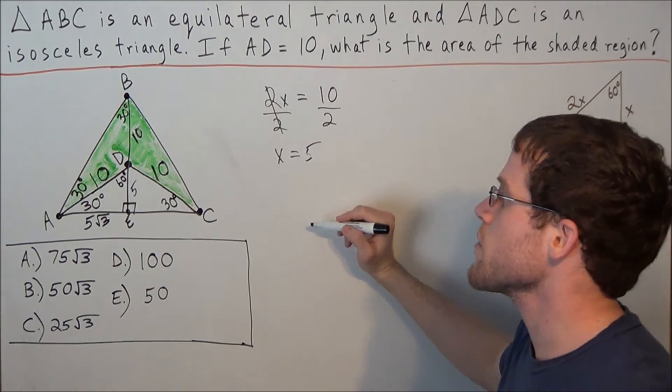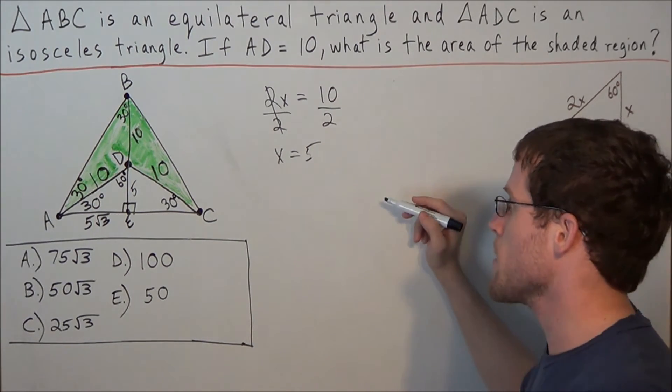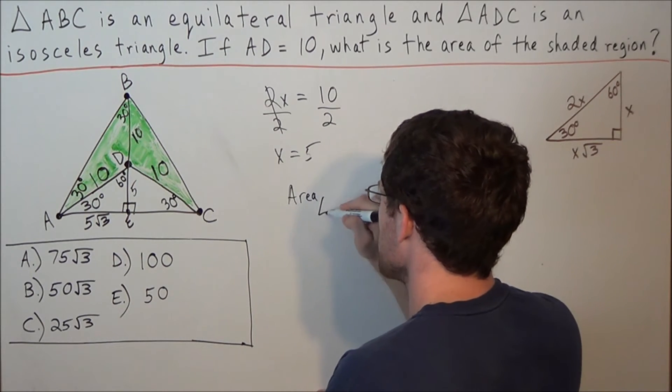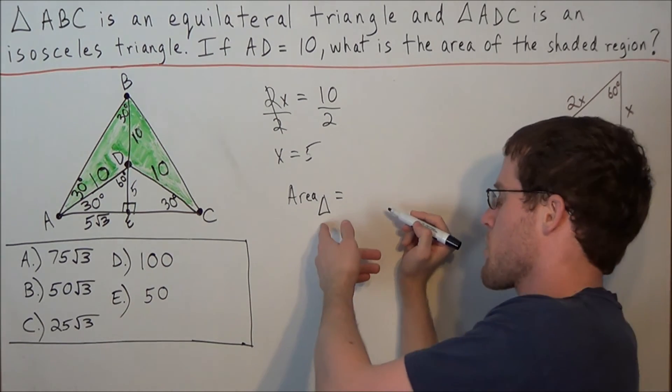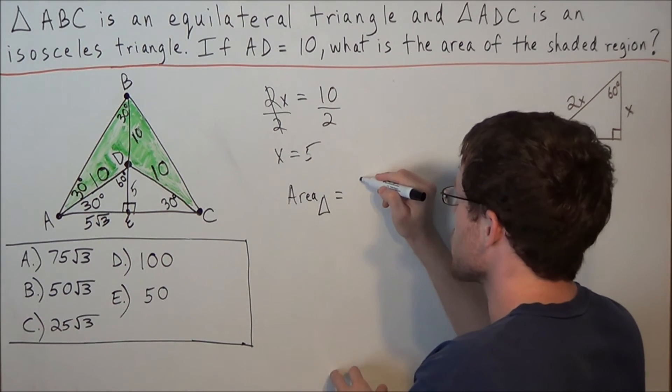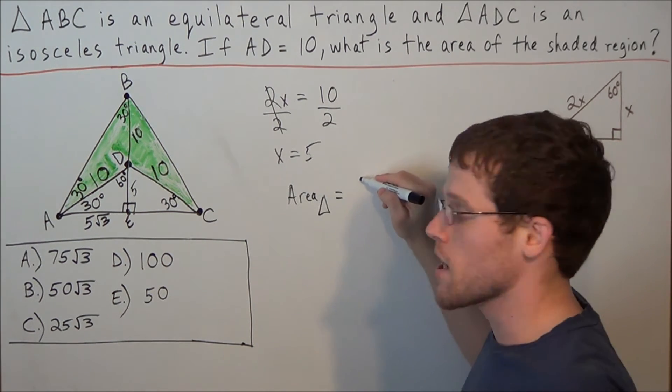So now we have enough information to solve this problem. We're going to find the area of the big triangle, which we'll indicate with a bigger triangle. And in general, the area of a triangle is one half the base times the height.